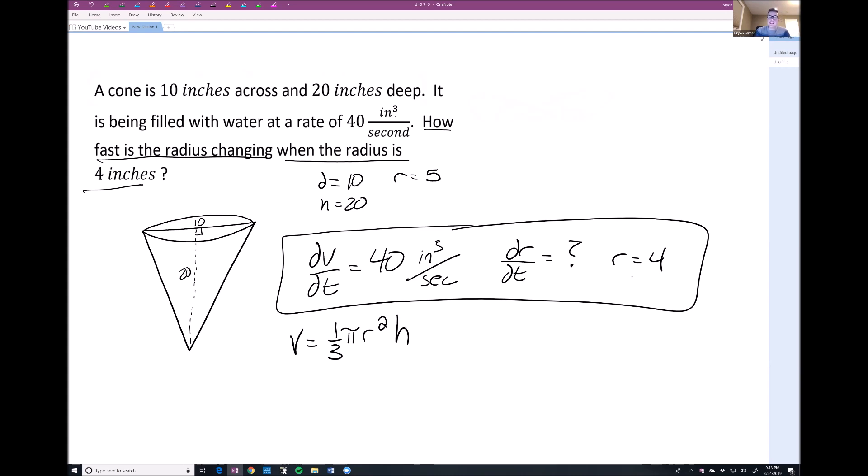Alright, so we need to come up with a relationship between h and r. Okay, well the relationship between r and h, we said r was 5 and we said h was 20. So I'm going to set up this equation here. And I'm going to go ahead and cross multiply. So 5 times h would equal 20 times r.